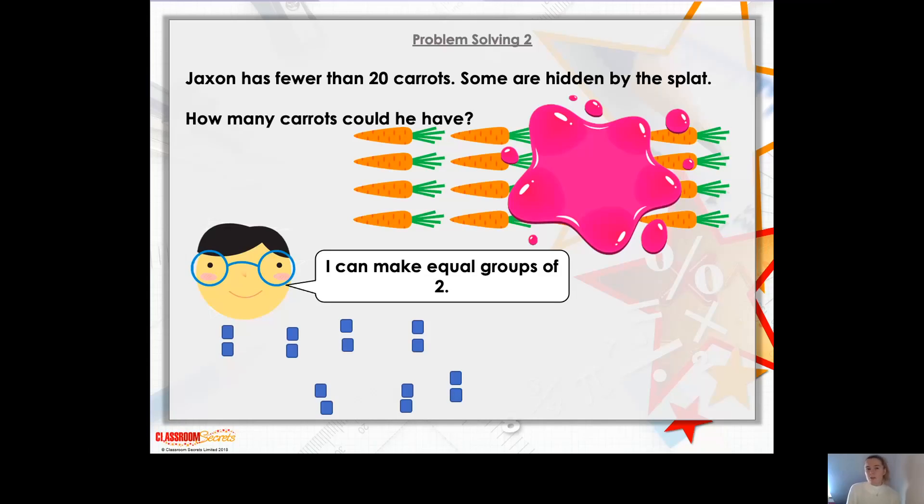And remember, when we spoke about even numbers, 14 was one of our even numbers, wasn't it? And remember, all of the even numbers are able to have a partner, aren't they? So there you go. Maybe that's why it could be that number, because 14 is an even number.